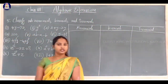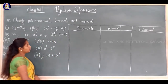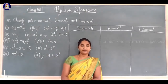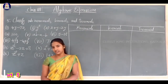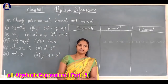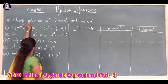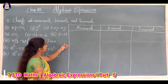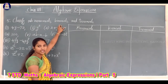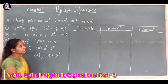Next question: classify into monomials, binomials, and trinomials. Monomial means an expression which contains only one term. An expression which contains only two terms is called a binomial, and an expression which contains three terms is called a trinomial.